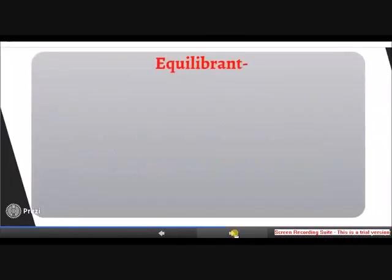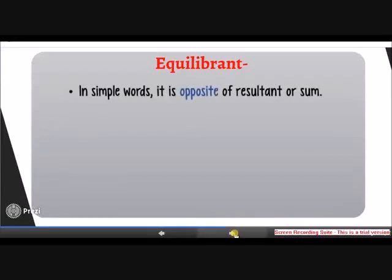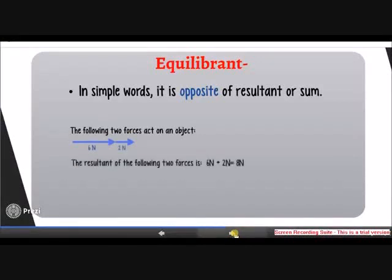Equilibrium is basically a single force that is opposite of resultant. In this example, there's two forces acting on an object: one is 6 Newton and the other is 2 Newton. To find the resultant, since they're in the same direction, we add them up to get 8 Newton. The equilibrium is the same in magnitude but opposite in direction.